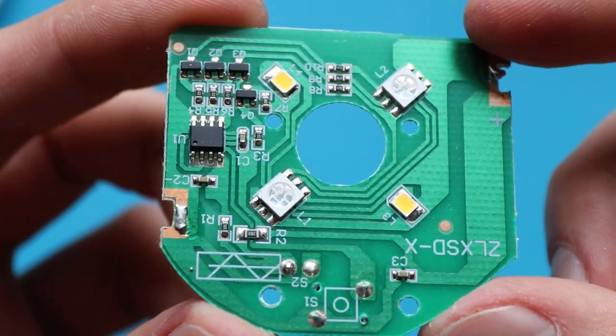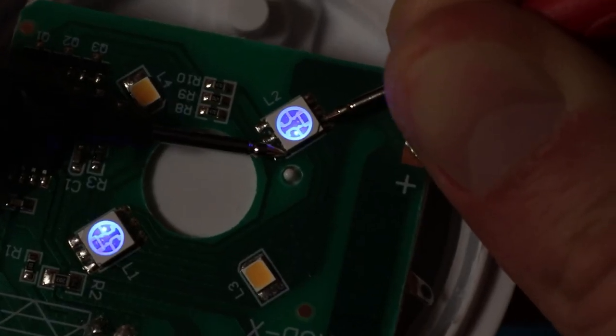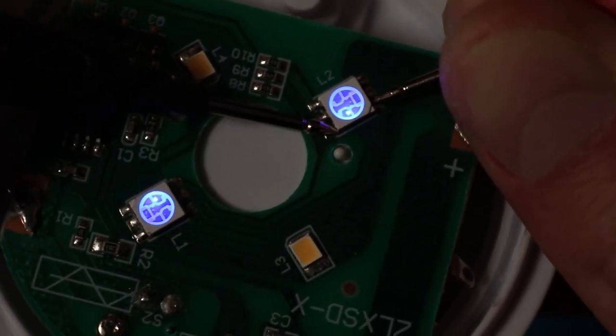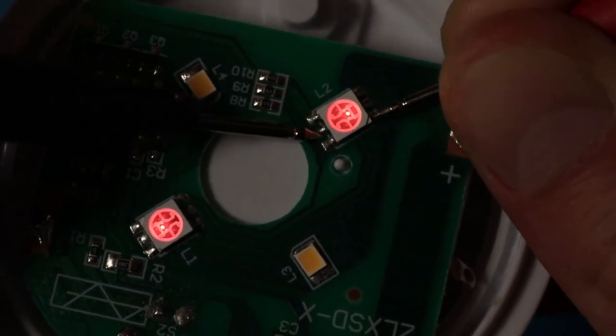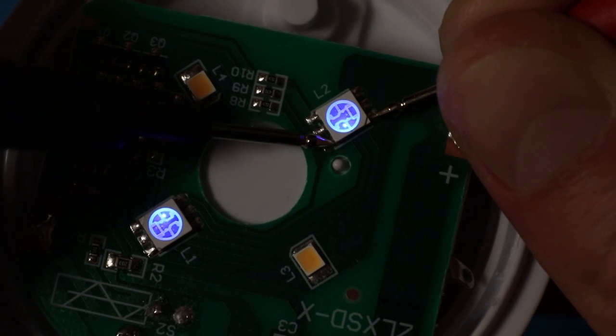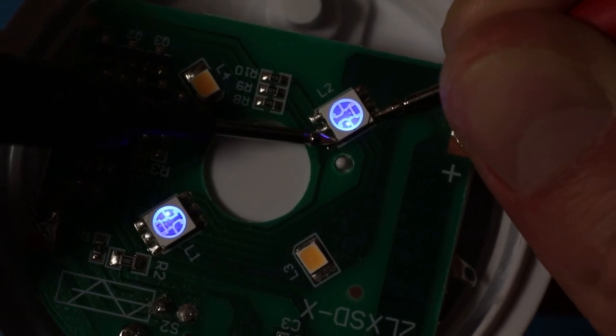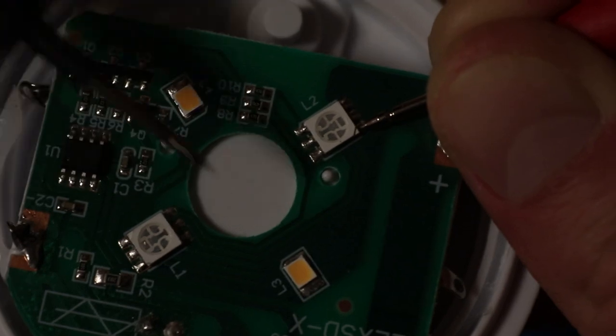In order to check any LEDs, it is possible to use a simple multimeter in a diode check mode. So, when a plus probe is applied to anode and minus to cathode of a diode, it starts glowing. As you can see, red, green and blue colors are controlled independently, which allows different color mixing ability.